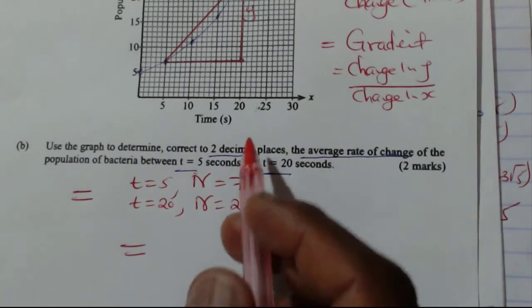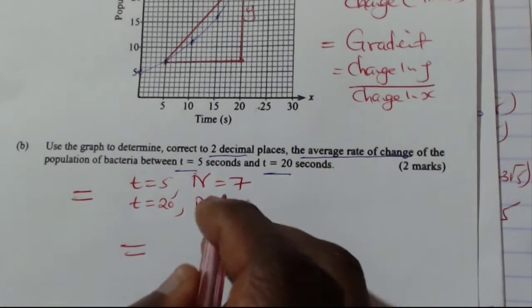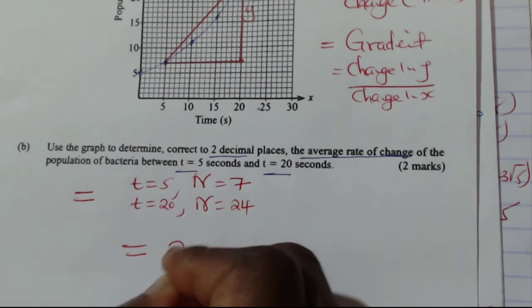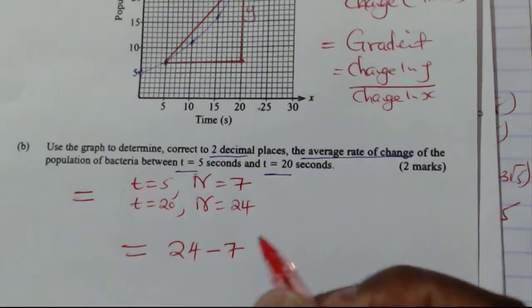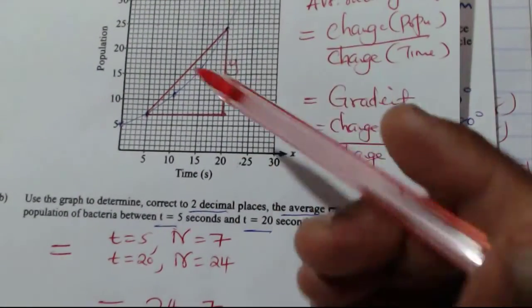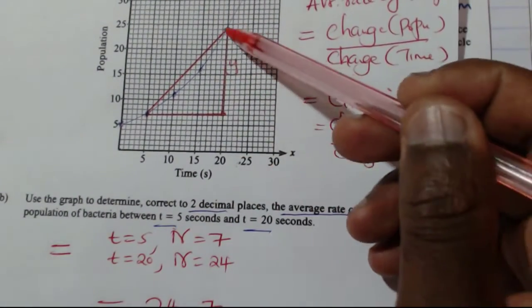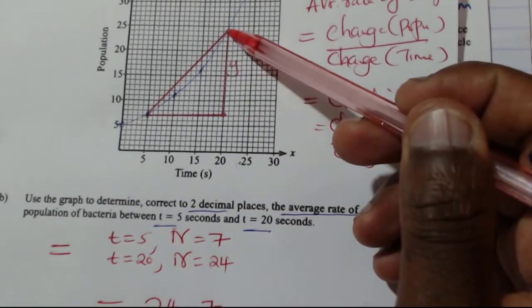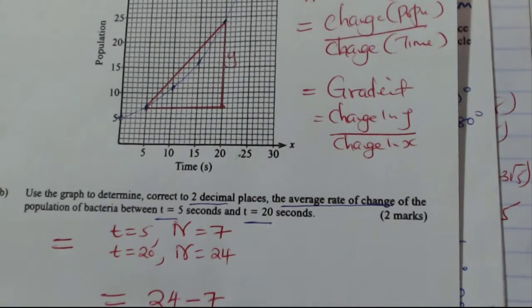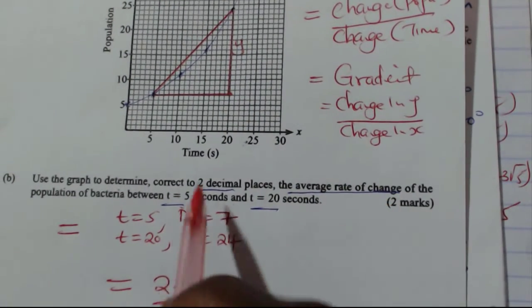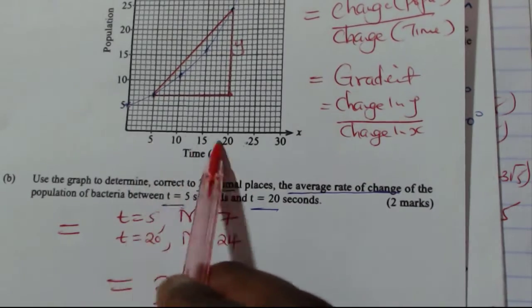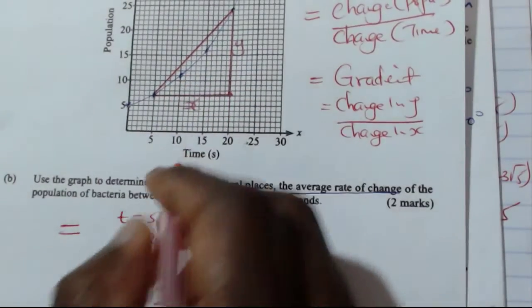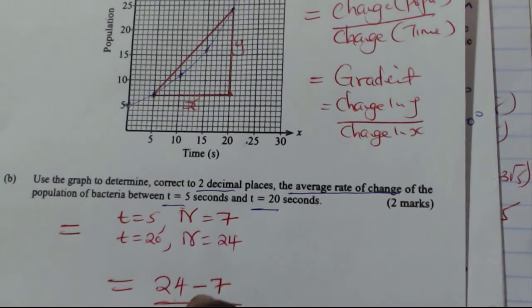So we shall get the change in population. Change in population is from, we're going to take 24, subtract 7. That will give us the change, the displacement. In this case, this will be the displacement here in Y. The displacement is from 7 to 24. So we just take 24, subtract 7. Then the change in time, it is from 5 to 20. From 5 to 20, what is the displacement there? The displacement is given by 20 subtract 5.